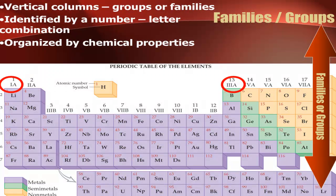Vertical columns are called groups or families, and they are identified by a letter-number combination. So here at the top: 1A, or group number one; 2A; down in the middle are B's; and back on the right are A's again. Or they're just numbered one through 18. The old way used Roman numerals with letters A and B; the new way just numbers them one through 18. They are arranged by chemical properties — the reason they're called families is because they all behave the same. For example, drop all the group 1A elements in water and they explode. You should know both terms: families and groups.